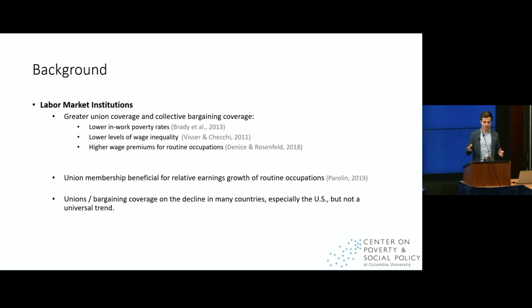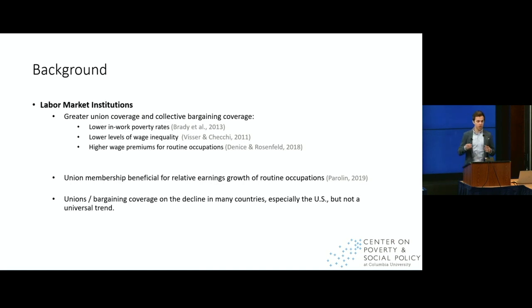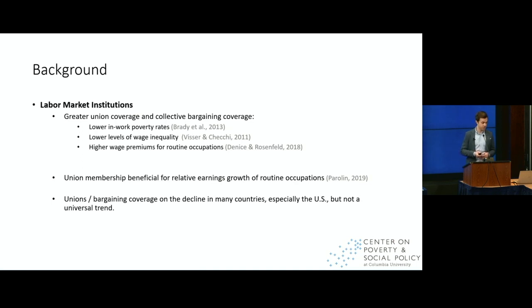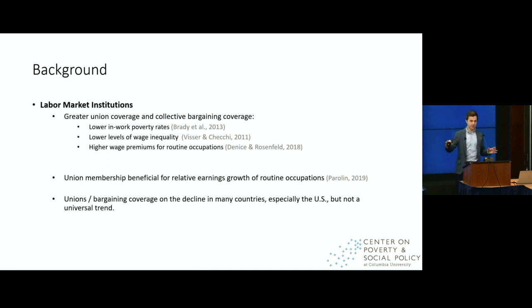Why focus on organized labor? There's plenty of evidence that greater union or collective bargaining coverage in cross-national comparison is associated with lower levels of in-work poverty rates, more compressed wage distribution, more employment security for individuals in precarious jobs, and higher wage premiums for workers in routine occupations. I've shown in work for the OECD that union membership is beneficial for the relative earnings growth of routine occupations. And we know that unionization is on the decline here in the US, but that is not a universal trend, particularly when we look at collective bargaining coverage in other high-income countries.